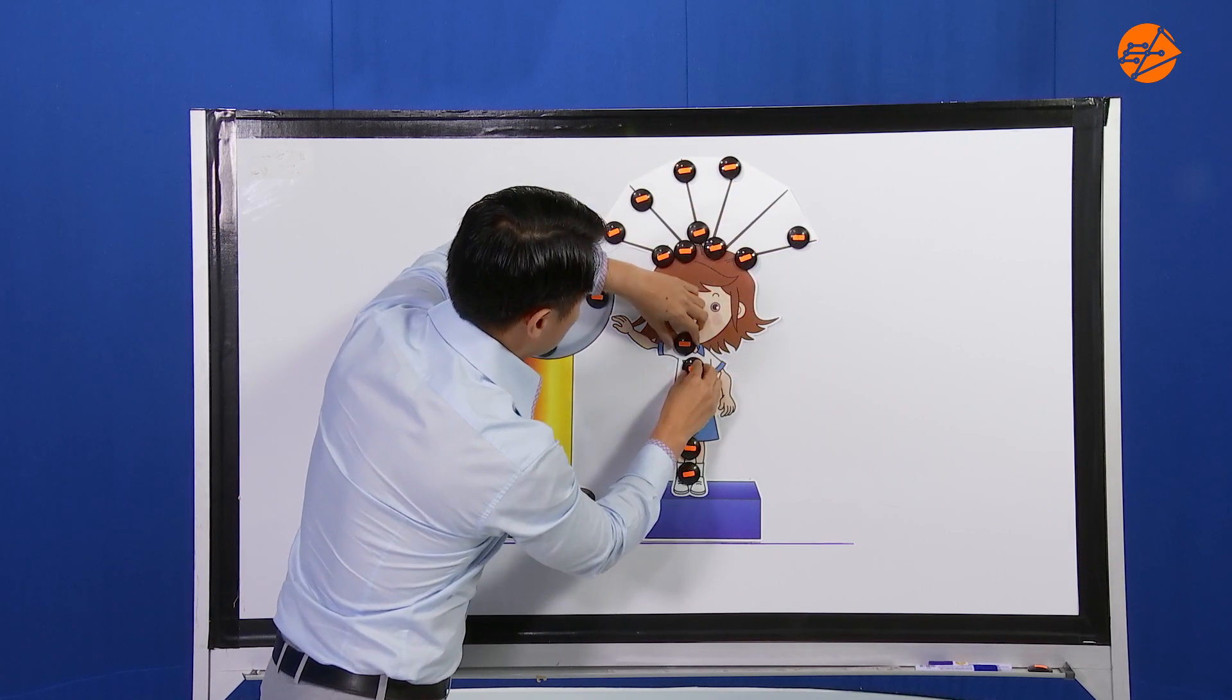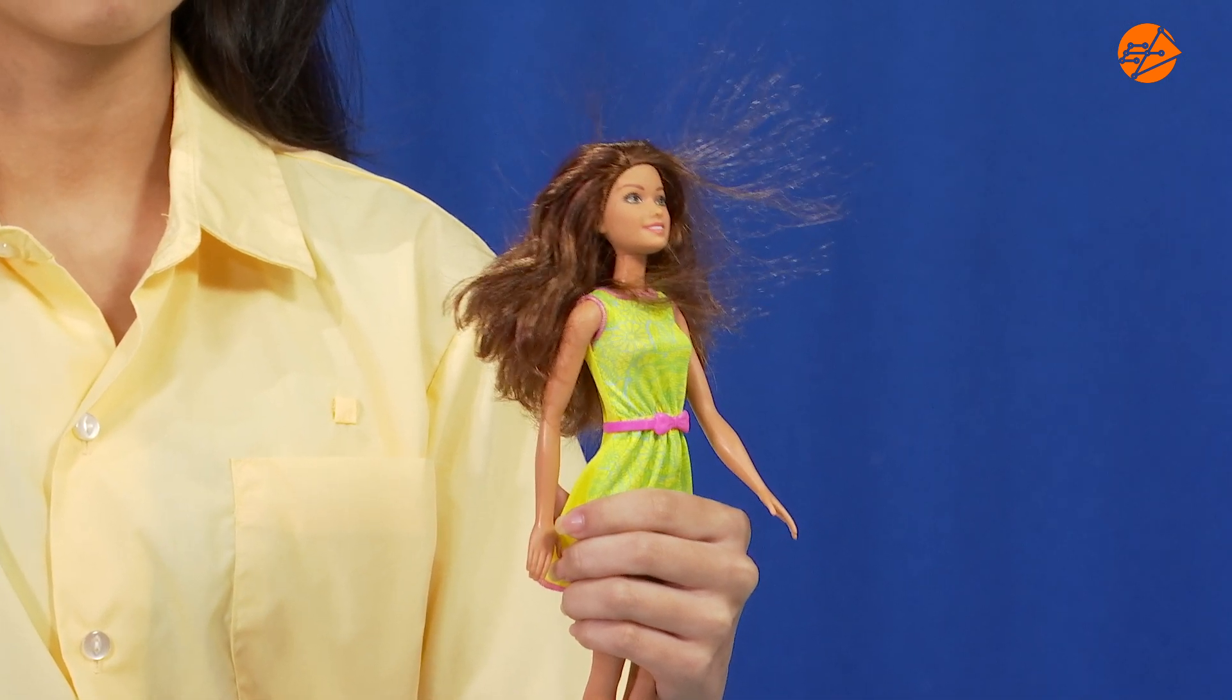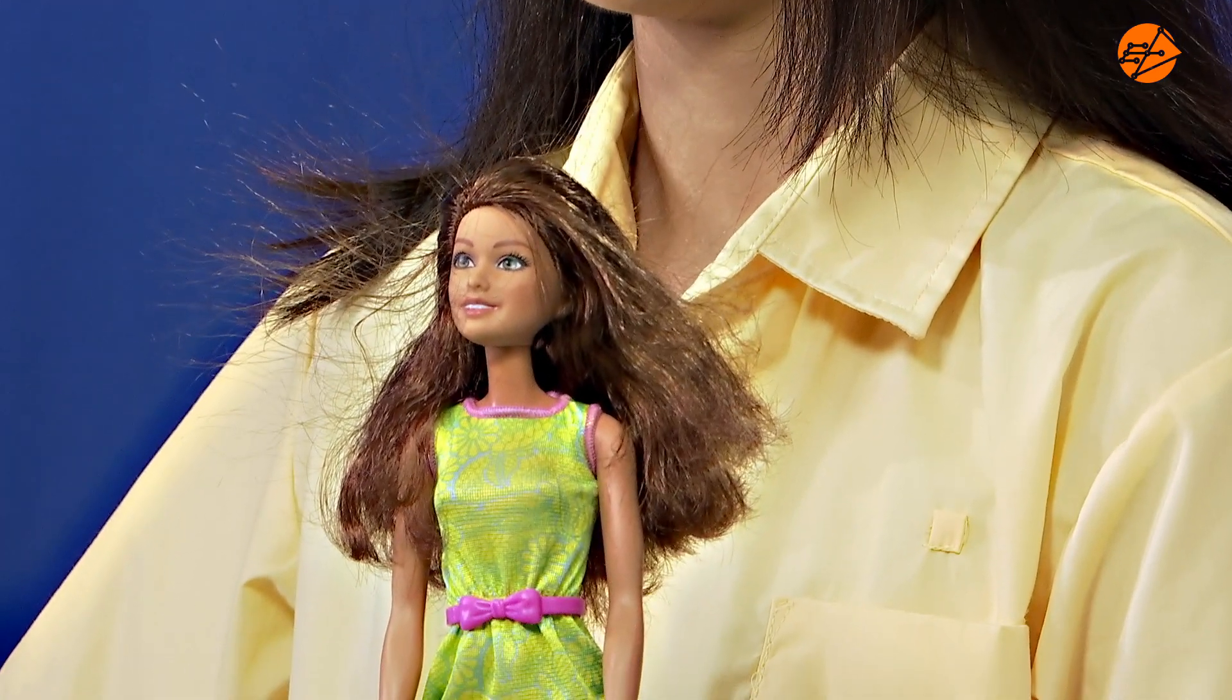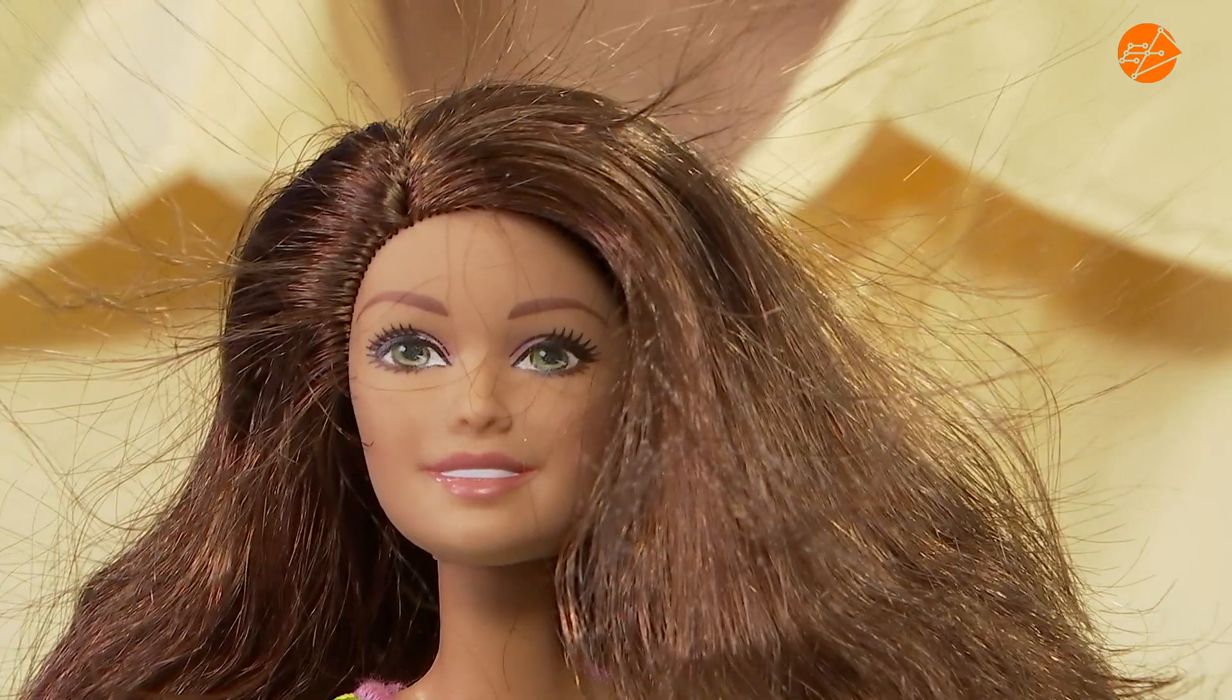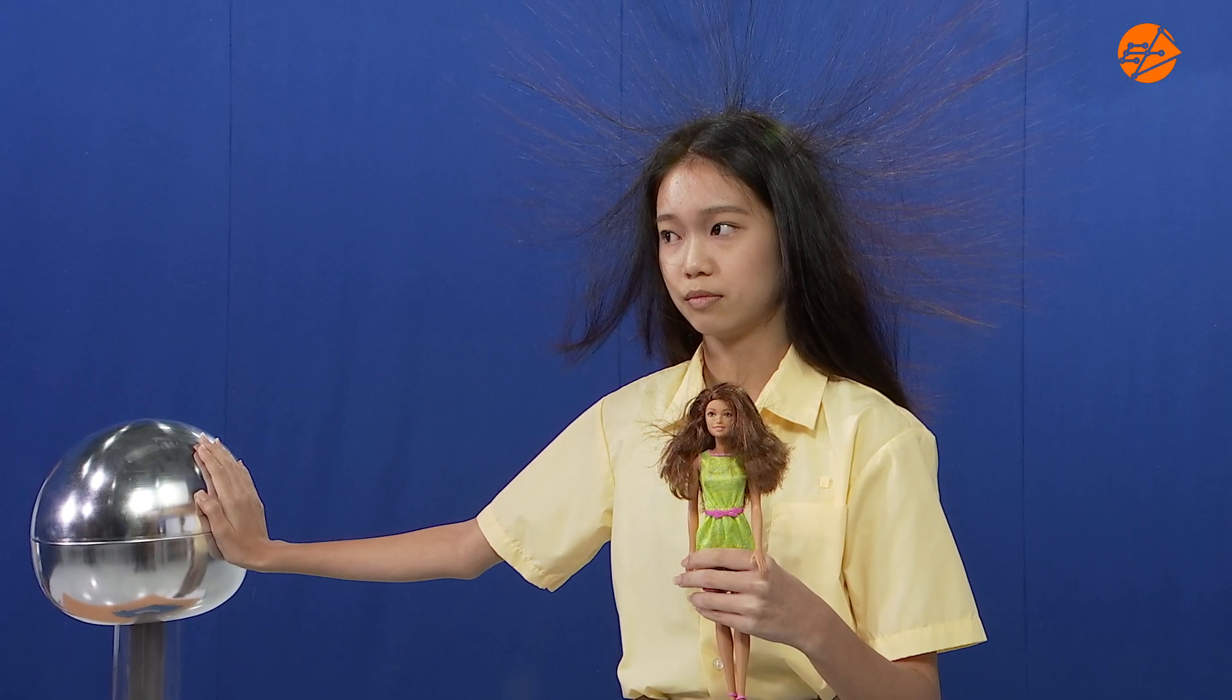While the dog is not shown in the graphic, its hair is also standing due to the effect of the same electrostatic forces. This shows that the invisible negative charges are transferred all over my student's body as well as transferring from her hand to the dog.